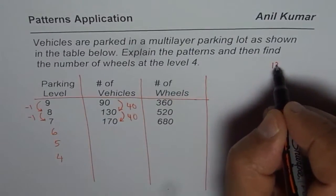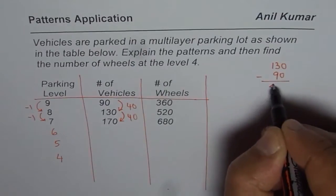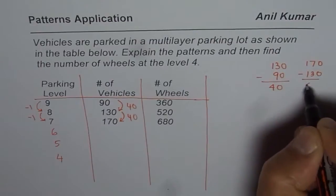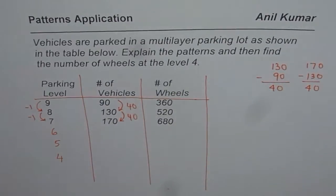So what we did was: we did 130 take away 90 and got 40. And then we did 170 take away 130. We again got 40. So that means it is increasing by 40.